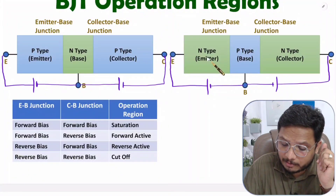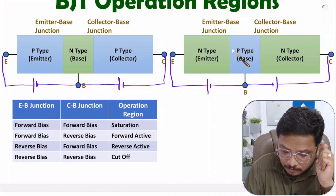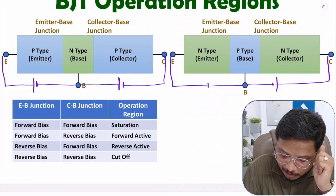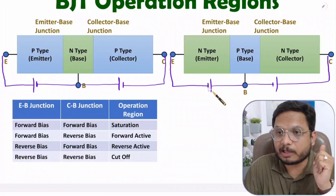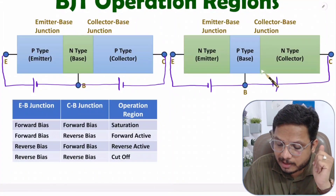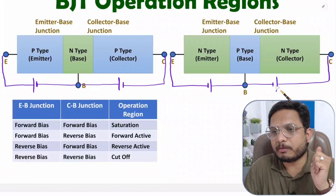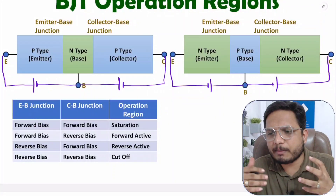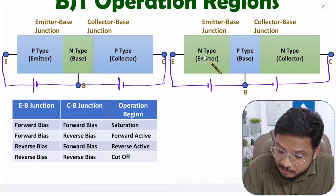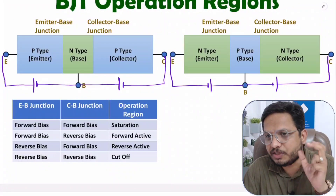To have NPN in forward active region, to keep the emitter-base junction in forward bias, the N-type should be connected with the negative terminal of the battery and the P-type with the positive terminal. To have the collector-base junction in reverse bias, P will be connected with the negative terminal and N with the positive terminal. This is how biasing is provided to have the NPN transistor in forward active region.